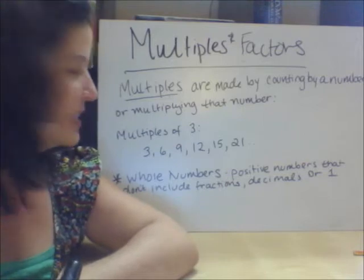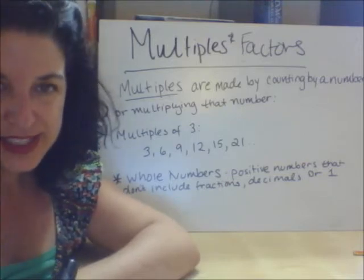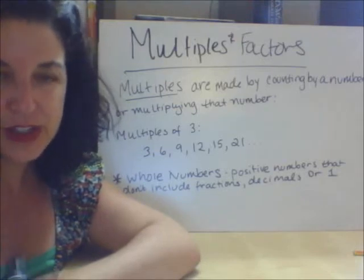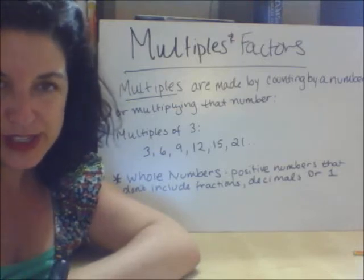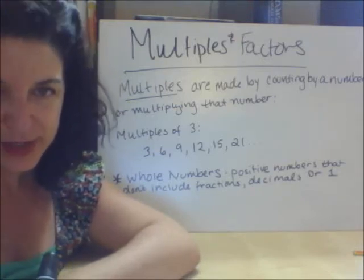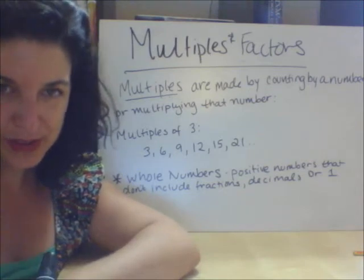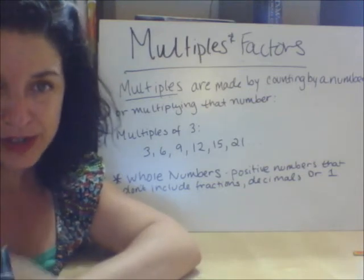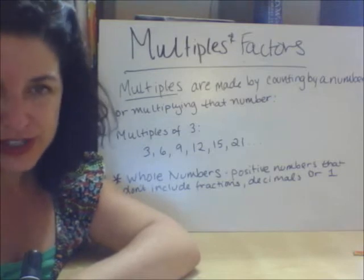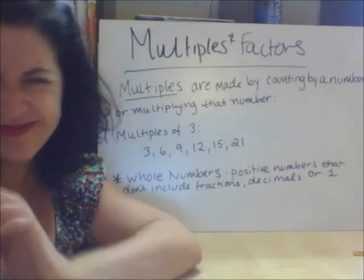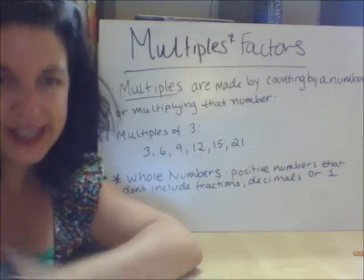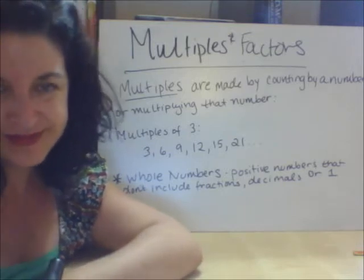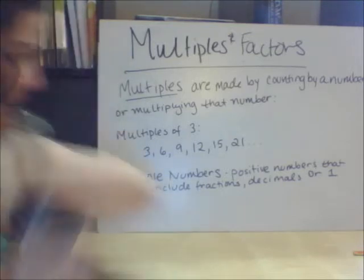All right, and just on a side note, the stuff we're going to be looking at today is involving whole numbers. So when you hear the term whole numbers, we're talking about positive numbers as opposed to negative numbers — positive numbers greater than zero that aren't fractions or decimals. So as the word whole would imply: 1, 2, 3, 4 upward. That's a whole number.